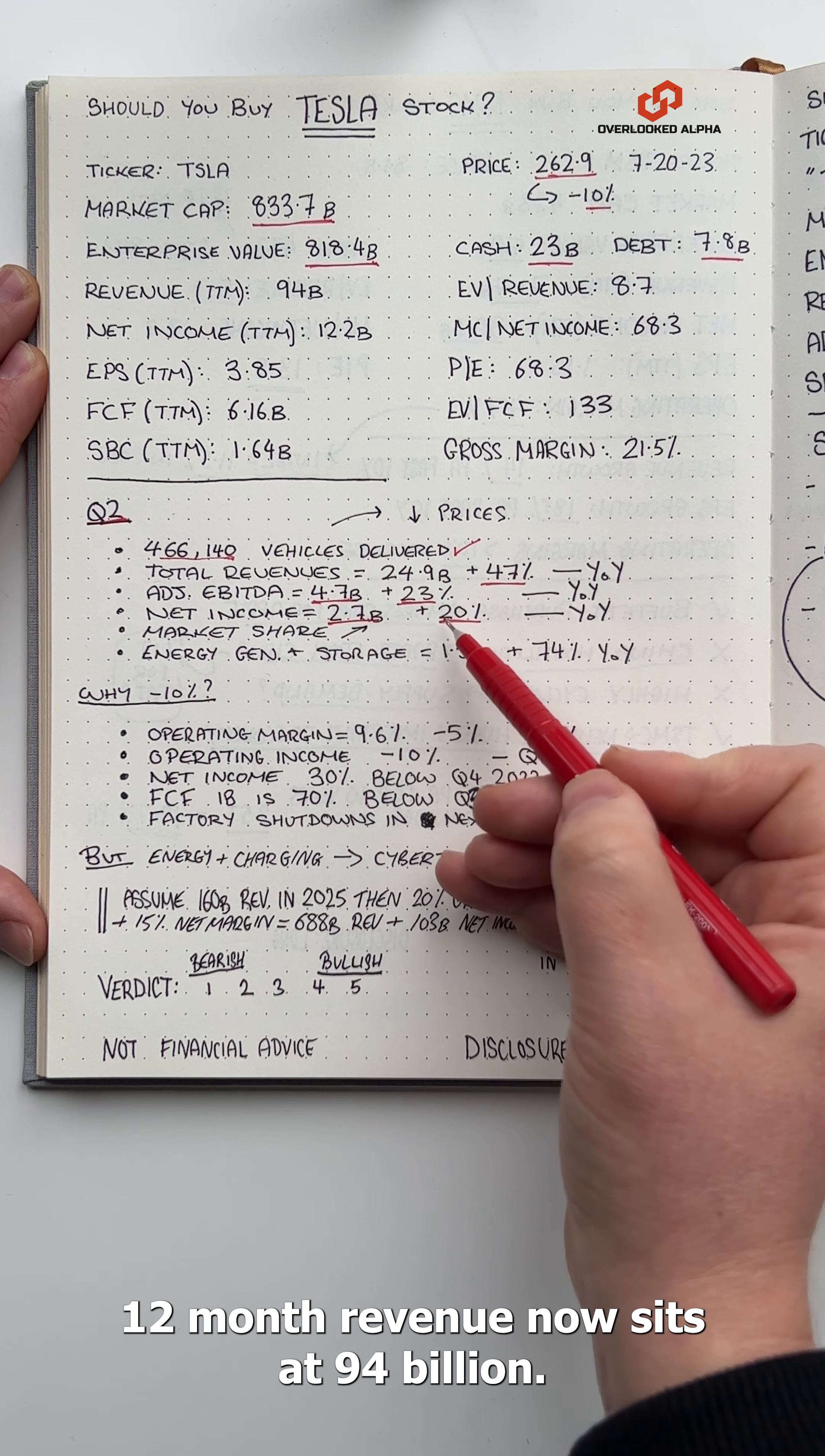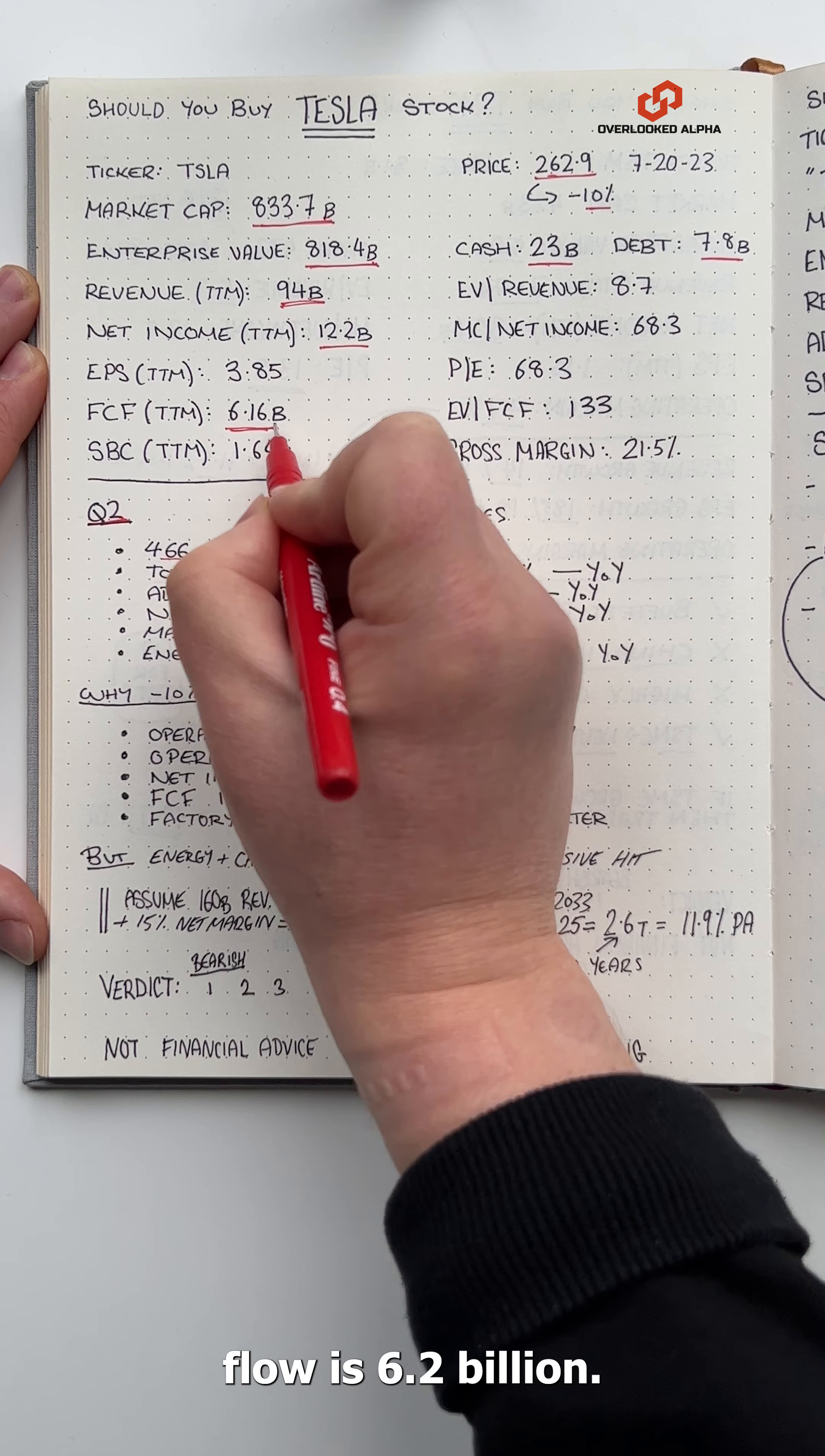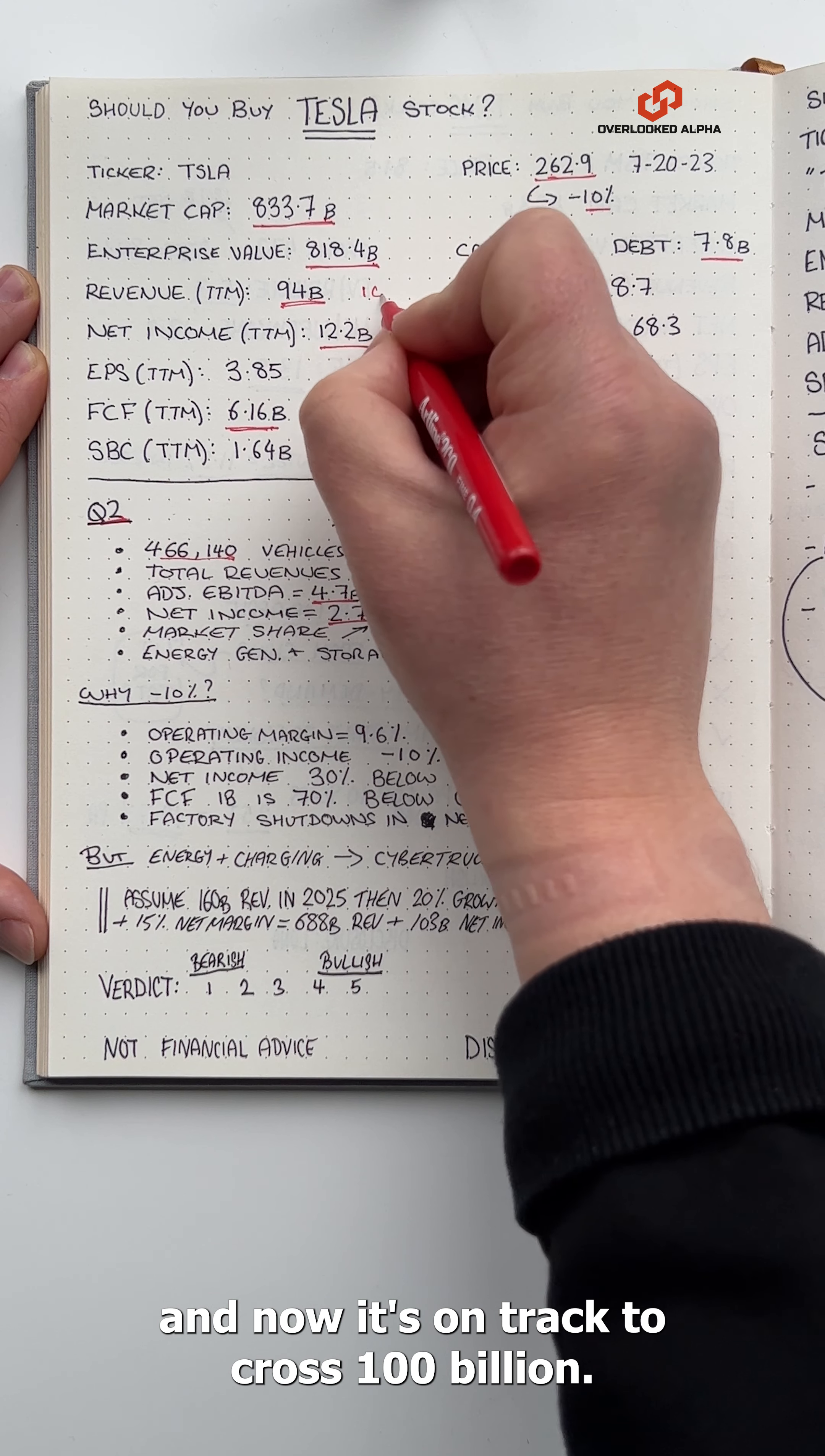That means trailing 12-month revenue now sits at $94 billion, net income is $12.2 billion, and free cash flow is $6.2 billion. Just 10 years ago Tesla was doing only $2 billion in revenue and now it's on track to cross $100 billion.